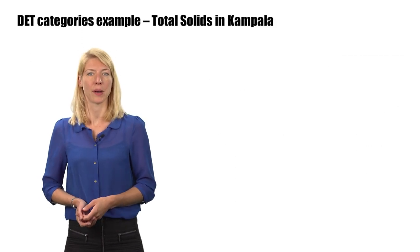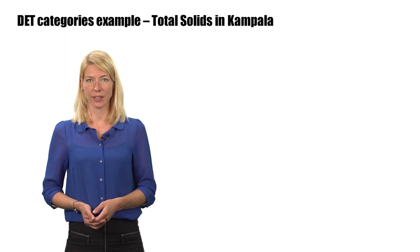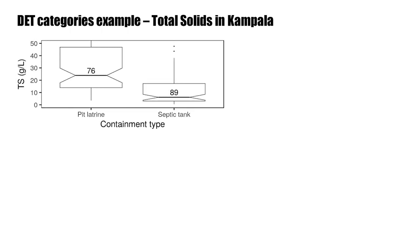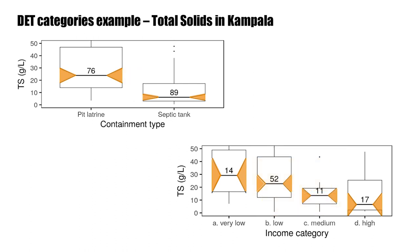Here is an example from Kampala, where we analyze total solids concentration by categories of DET. We see here that total solids concentrations for containment type and income level were statistically significantly different, which is represented by the notches around the median. In this way, we can separate out categories of data to use when making weighted averages. For example, high and low income level or septic tank and pit latrine.